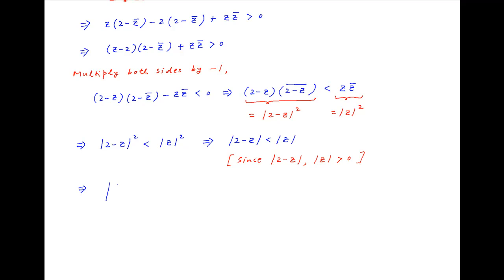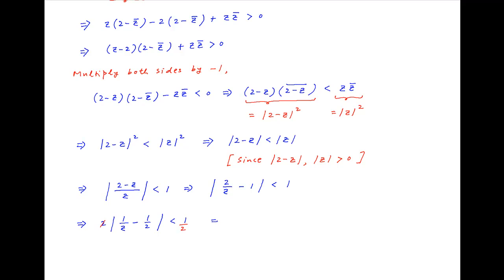This inequality can be written as the absolute value of (2 minus z) over z is less than 1, which means the absolute value of (2/z minus 1) is less than 1. Taking 2 common on the left-hand side, we get 2 times the absolute value of (1/z minus 1/2) is less than 1. Dividing both sides by 2, we get the absolute value of (1/z minus 1/2) is less than 1/2, which is the required result.